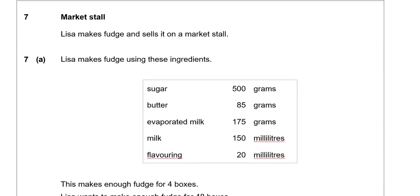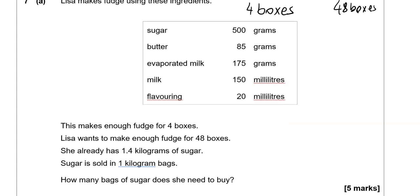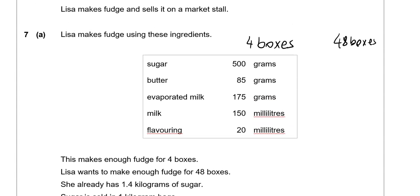Market stall. Lisa makes fudge and sells it on a market stall. Lisa makes fudge using these ingredients: sugar, butter, evaporated milk, milk and flavoring with the measurements. Lisa makes enough fudge for 4 boxes. Lisa wants to make enough fudge for 48 boxes. She already has 1.4 kilograms of sugar. Sugar is sold in 1 kilogram bags. How many bags of sugar does she need to buy?